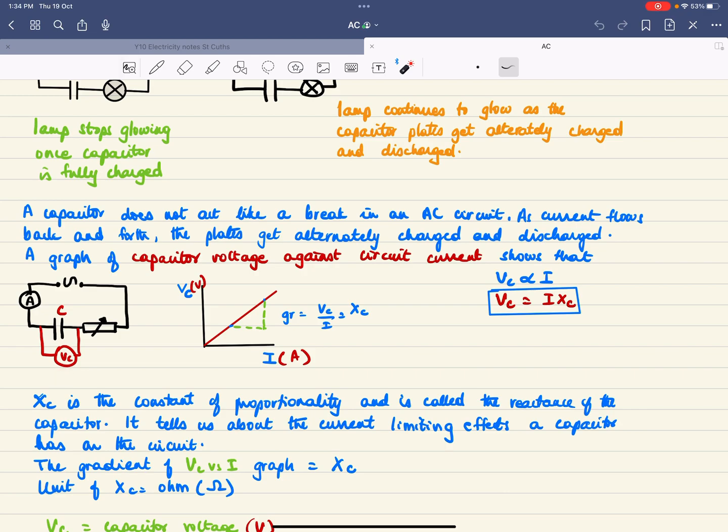If you plot voltage across the capacitor Vc against current, you're going to get a straight line that tells you that the voltage across the capacitor is proportional to current.